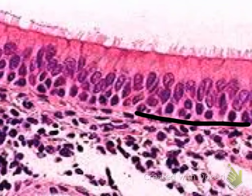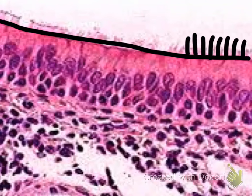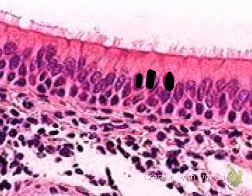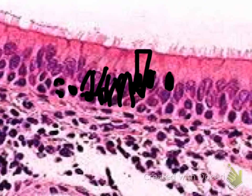Basement membrane. Apical surface. Notice there is something special about the apical surface — you see these hair-like structures on the surface. Those are your cilia. Notice that the nuclei are tall and oval-shaped, and the cells are tall. But it gives you the appearance that there are multiple layers. In technicality, there is still just one layer. So this is your pseudostratified ciliated columnar epithelium.